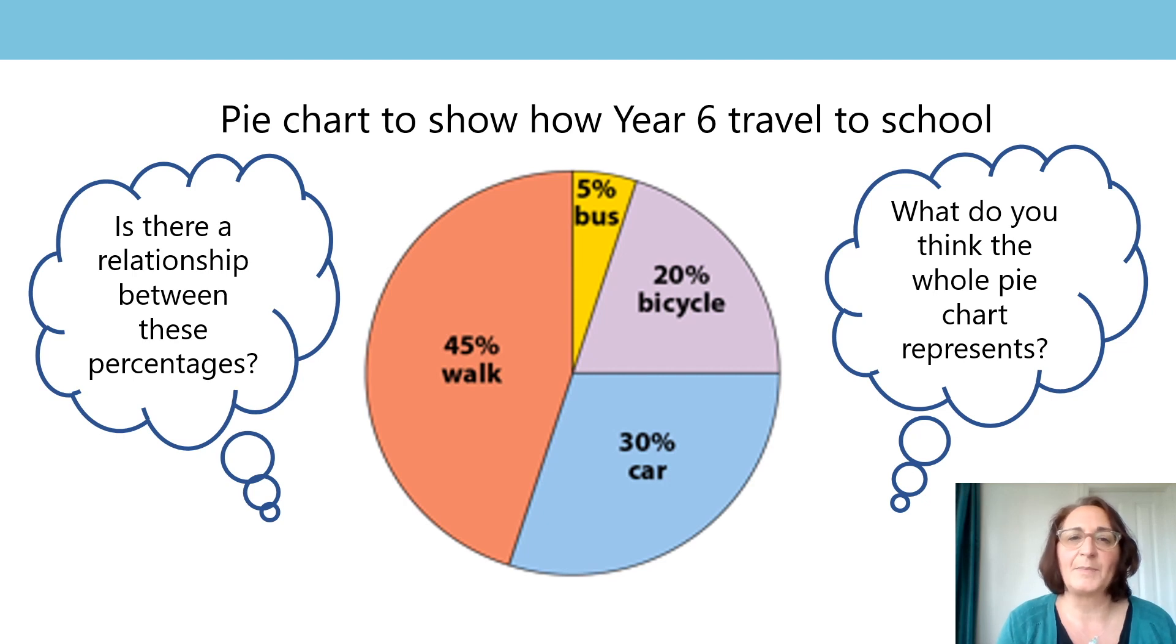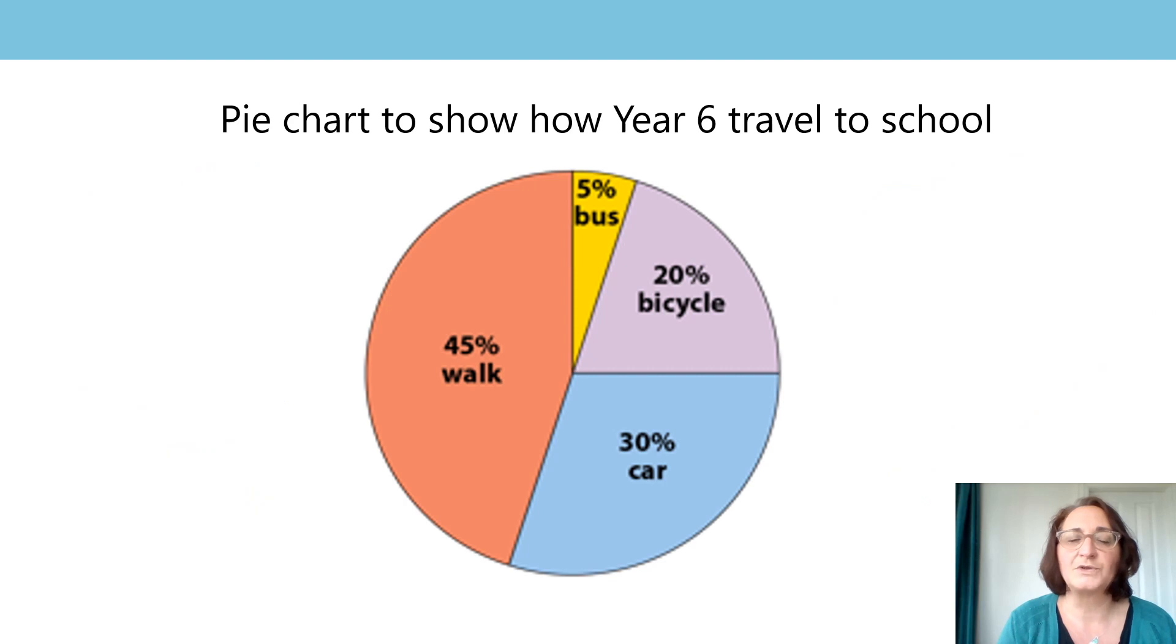I noticed that the pie chart is showing me all the different ways that Year 6 travelled to school. 5% took the bus, 20% rode their bicycle, 30% were driven in a car and 45% walked. The total of all these modes of transport is 100% of the children in Year 6. What does this pie chart tell us? It doesn't tell us the amount of children that are in Year 6. Instead it shows the proportion of children who chose a particular mode of transport out of 100%.